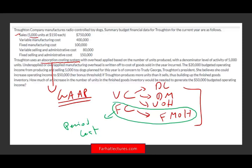The fixed overhead is applied based on the number of units produced, with a denominator level of activity of 5,000 units. So they are allocating fixed manufacturing overhead based on 5,000 units produced. Under-applied or over-applied overhead is written off to cost of goods sold in the year — so if we over- or under-estimate manufacturing overhead, we close it to cost of goods sold.